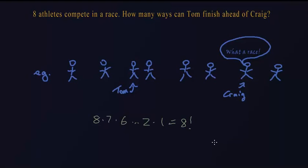How many ways is Tom ahead of Craig? Using this example, we see that in any finishing possibility, without loss of generality, let's say Tom is ahead of Craig. If Tom is ahead of Craig, then the reverse of this finishing position would have Craig finish ahead of Tom. So in every position, if Tom is ahead of Craig, then the reverse position will have Craig ahead of Tom.